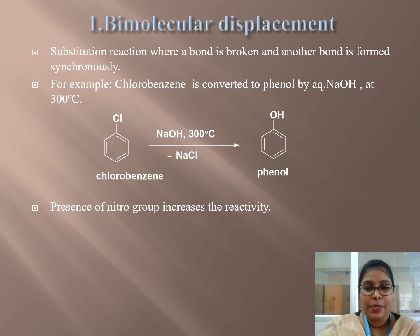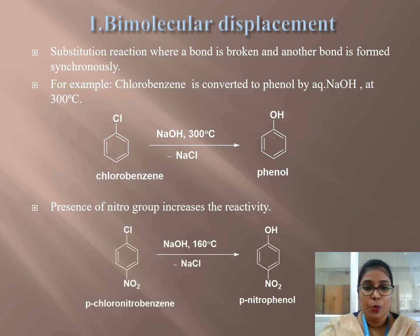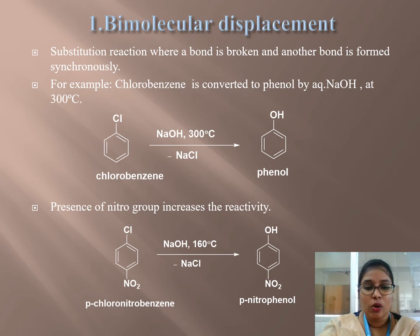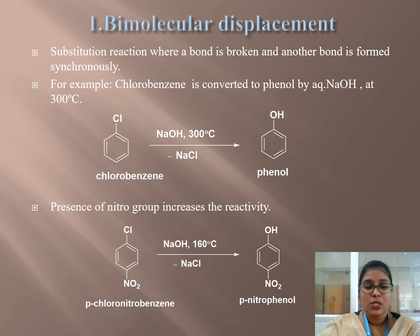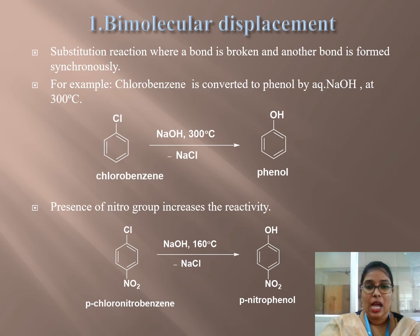In the presence of activating groups, reactivity is increased. For example, para-fluoronitrobenzene reacts with aqueous sodium hydroxide at 160 degrees centigrade, converting into para-nitrophenol. If you compare the temperatures: in the absence of activating groups, higher temperatures (300°C) are required, whereas in the presence of activating groups, only 160 degrees centigrade is needed.